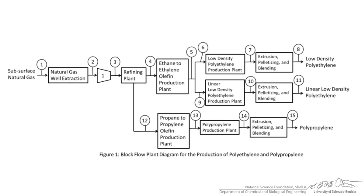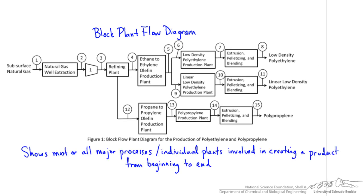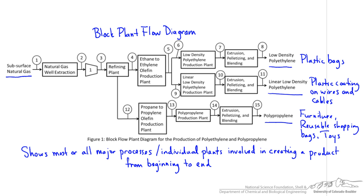The third example of a block flow diagram I'd like to show you is this block plant flow diagram. This is about as broad as a block flow diagram can be because it shows most, if not all, of the steps involved in producing a chemical product from beginning to end. This block plant flow diagram shows how three important plastics are made from natural gas, including all major components and processes in an entire facility or group of facilities, and it shows how simple starting materials are made into specific products.